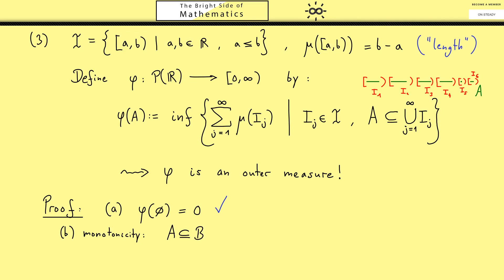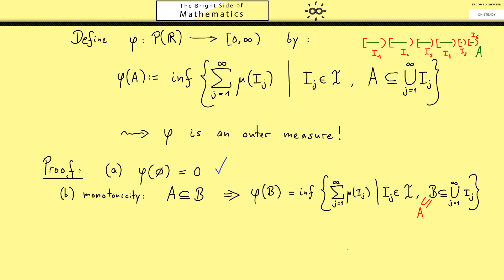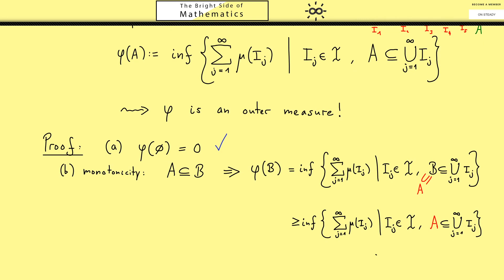For monotonicity, we choose two sets where one is a subset of the other. The definition of phi(B) is the infimum of these lengths, where we choose intervals covering the set B. However, since B is a superset of A, the intervals covering B also cover A. This means that all possible coverings of B are also coverings of A, so we have more intervals for A than for B. Because we only add new intervals for A, the infimum can only get smaller or stay the same. Hence phi(B) is greater than or equal to phi(A), giving us monotonicity.